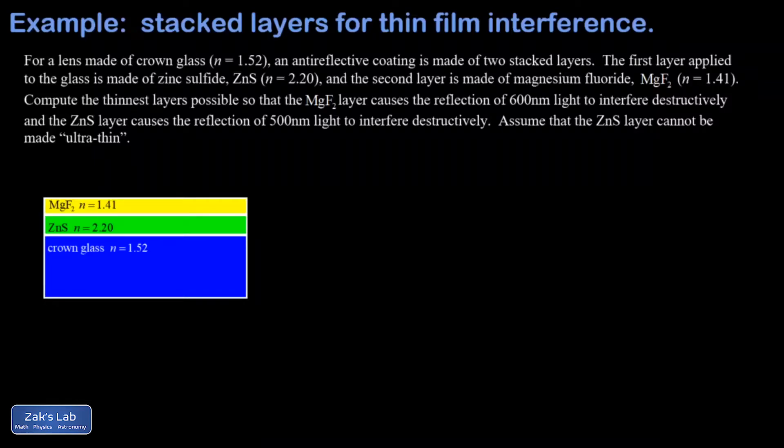In this video we're looking at destructive interference on a couple specific wavelengths of light through two different coatings on a crown glass lens. This starts to give you a sense for what happens when you stack thin films.